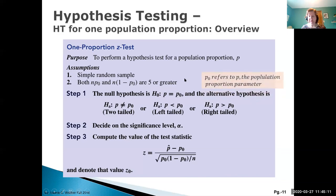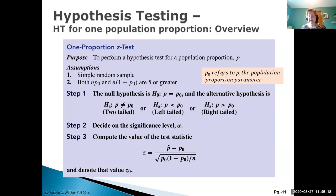Just to recall: on this slide from our textbook, P-naught refers to P, our population proportion parameter — don't get confused by that notation. When we solve problems we'll just use P to keep it simpler.